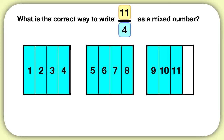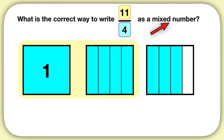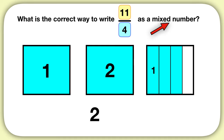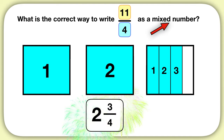Now that I've drawn my improper fraction, I need to write it as a mixed number. First, I'll have to count how many wholes I have. I can see that I have 1 whole square, 2 whole squares. Then I can count that I have 1, 2, 3 fourths left over. I can write those as a fraction like this. So all together, I have 2 wholes and 3 fourths.